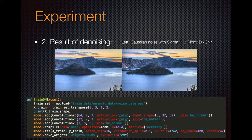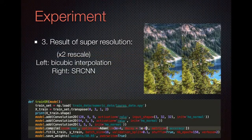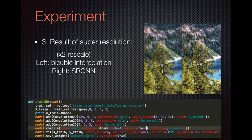The second is the result of denoising. On the left side, I added Gaussian noise with sigma 10 to the pictures, then put the noisy pictures through the CNN and got a clear image. For the super-resolution part, I rescaled with a factor of 3. On the left side, I used bicubic interpolation to rescale the images, then put these images through my CNN model to get a clear image. We can find the texture here is much clearer.